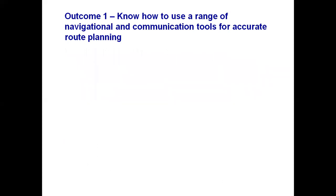Outcome 1: Know how to use a range of navigational and communication tools for accurate route planning. We're going to talk about maps — road atlases, UK maps, or local street maps, commonly known as A to Zs.